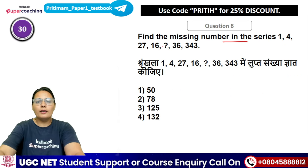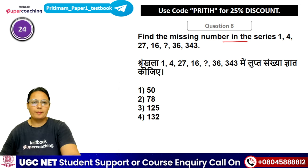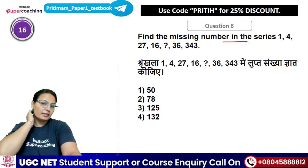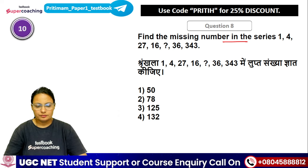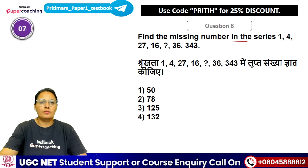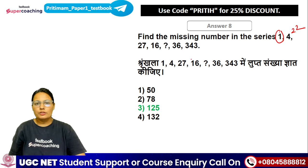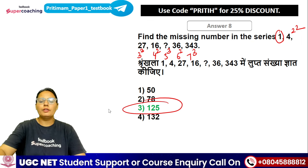Question number 8 — find the missing number: 1, 4, 27, 16, ?, 36, 343. The pattern alternates squares and cubes: 1² = 1, 2² = 4, 3³ = 27, 4² = 16, 5³ = ?, 6² = 36, 7³ = 343. So 5 cubed = 125 is the answer.